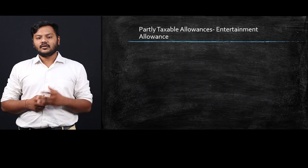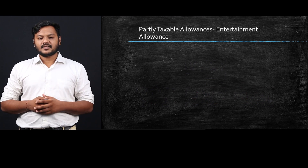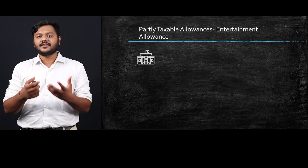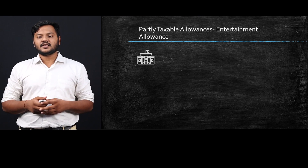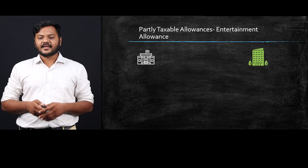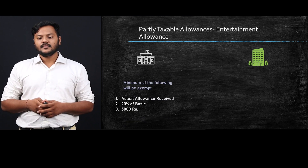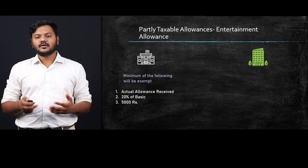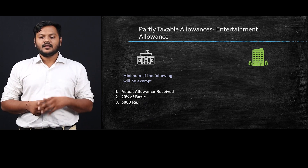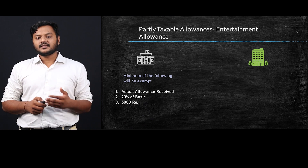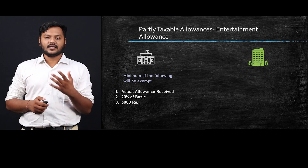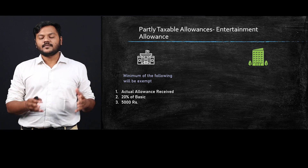Let's talk about partially taxable allowances, starting with entertainment allowance — allowances given for the purpose of entertainment of employees. This is bifurcated into two parts: allowances given to government employees by the government, and allowances given to private employees by their respective companies. For government employees, the exempted amount is whichever is least of the following: the actual allowance received, 20% of basic salary, or ₹5,000.